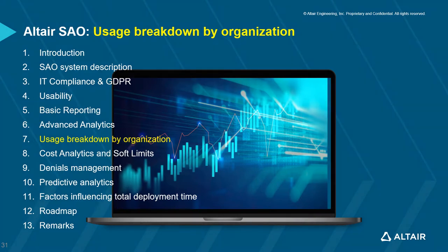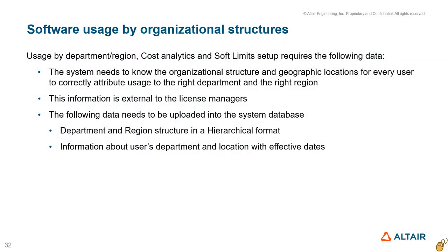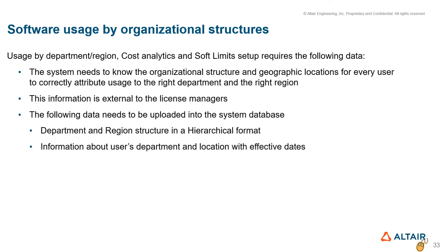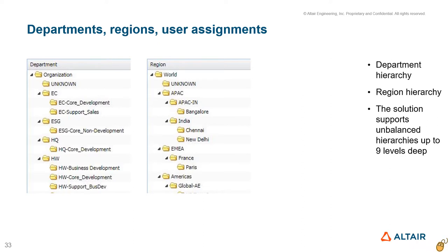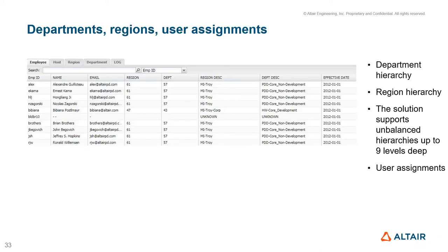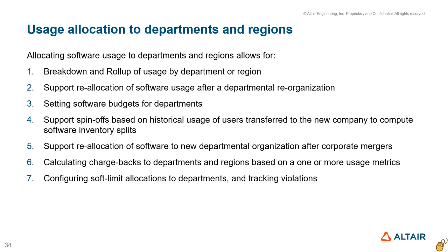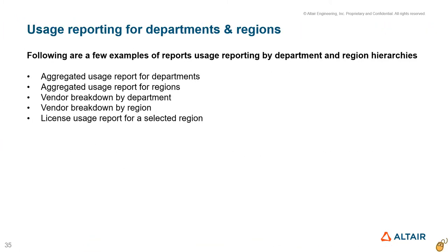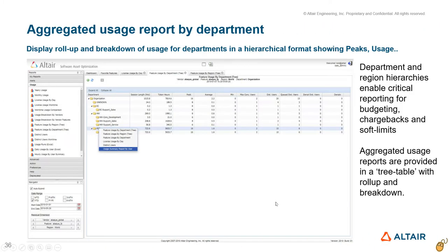Usage breakdown by organization requires the system to know the organizational structure for departments and regions with user assignments, allowing SAO to provide usage roll-up and breakdown, cost analytics, and setting up of soft limits. Department and regional hierarchies need to be uploaded into the SAO database. Users assigned to regions and departments with effective dates allows for correct allocation of usage, supporting spinoffs and mergers, chargebacks, and soft limit setup.